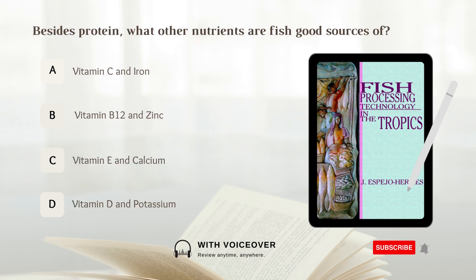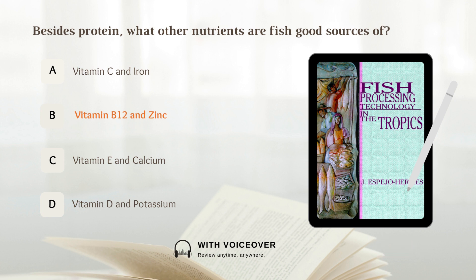Besides protein, what other nutrients are fish good sources of? A. Vitamin C and iron. B. Vitamin B12 and zinc. C. Vitamin E and calcium. D. Vitamin D and potassium. Answer: B. Vitamin B12 and zinc. Besides protein, fish are good sources of vitamin B12 and zinc.